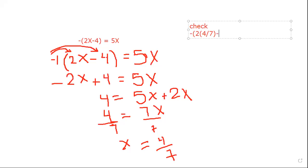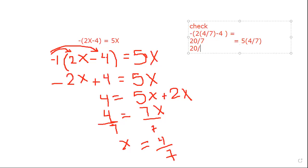What is the answer for the left side, Grade 8? Negative 2 multiplied by 4 over 7, minus 4. Calculate and tell me the answer. The answer is 20 over 7 — positive. Check the right side: it will be 5 times 4 over 7, so the answer will be 20 over 7. The right side also equals 20 over 7, which means both sides are the same — we have the right answer.